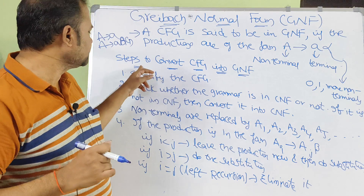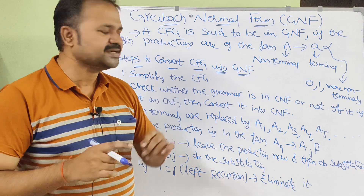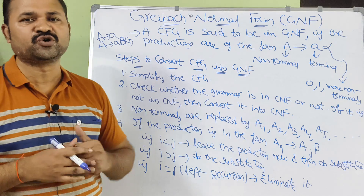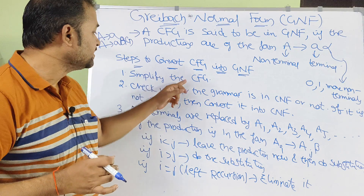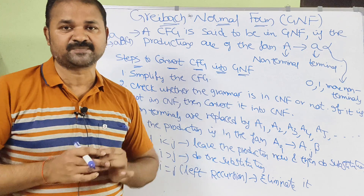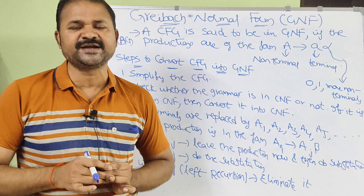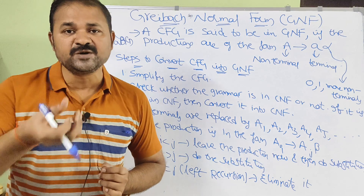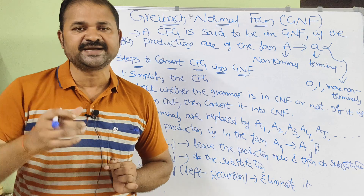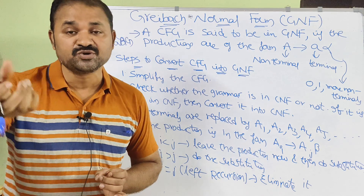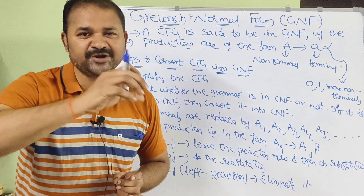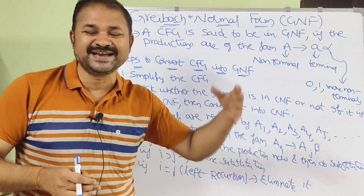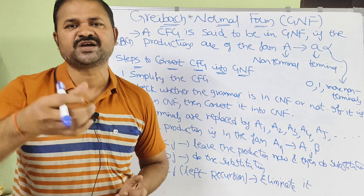Now let us see the steps to convert a CFG into GNF. There are four steps total. The first step is to simplify the context-free grammar — eliminate null (epsilon) productions, unit productions, and useless symbols or productions. This is called simplification, reduction, or minimization of the CFG.